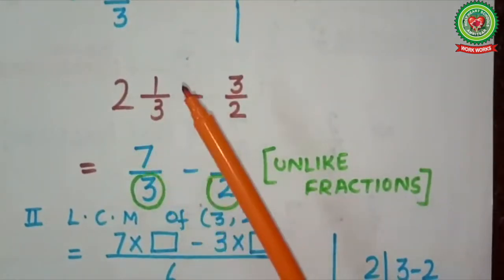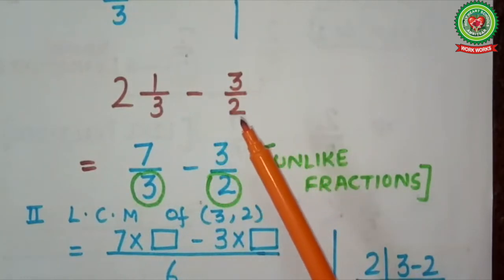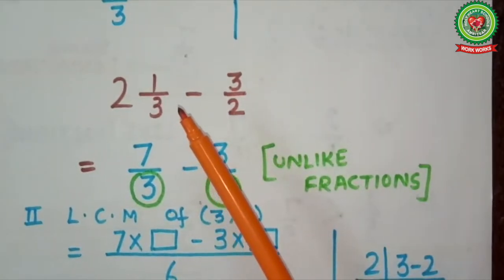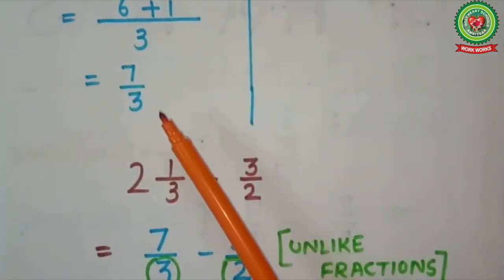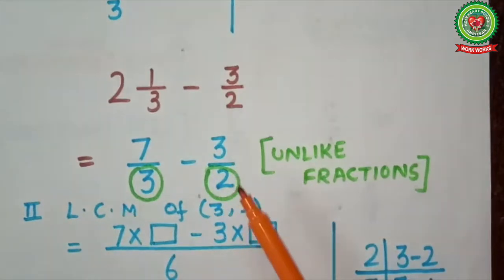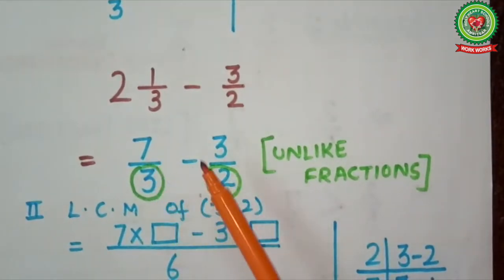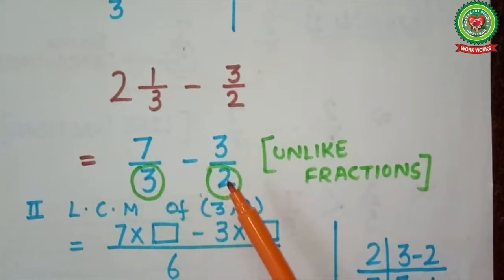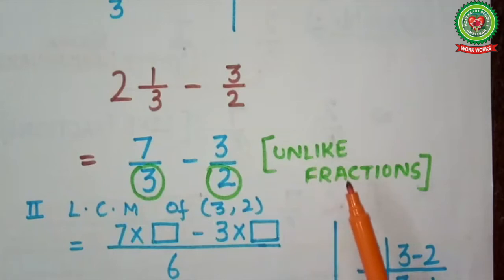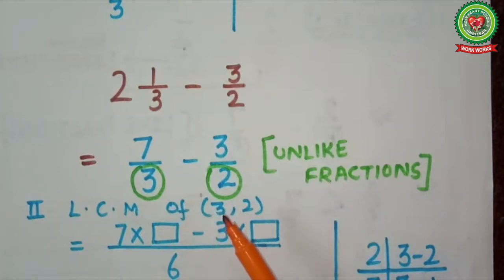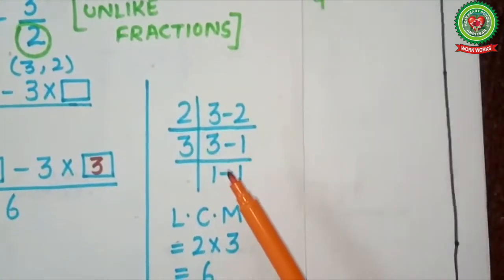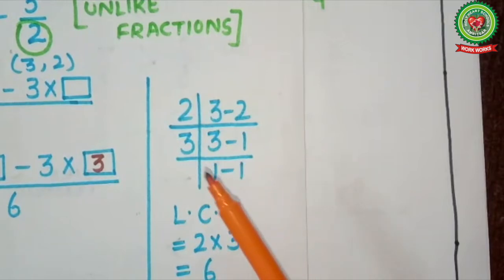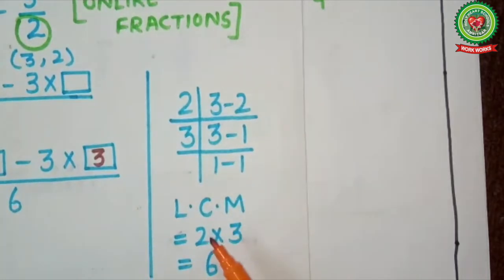The statement is 2 whole number 1 upon 3 minus 3 upon 2. Whenever a mixed fraction comes, we have to change it into an improper fraction. Step 1: change mixed fraction into improper fraction. Here it will come 3 twos are 6 plus 1 upon 3. 6 plus 1 is 7, so here we will write 7 upon 3. On the other hand, 3 upon 2 remains the same because it's already a fraction.